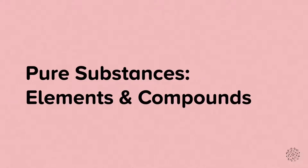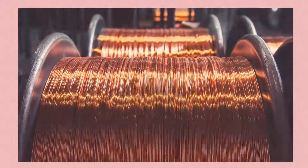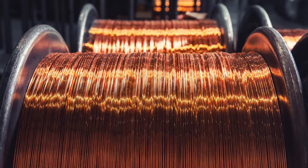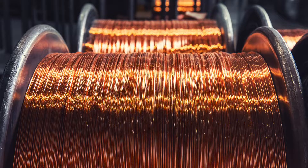Pure substances, elements and compounds. The copper that makes up this wire is a pure substance. But what exactly is a pure substance? A pure substance is a material that is made up of the same type of particle all the way through.